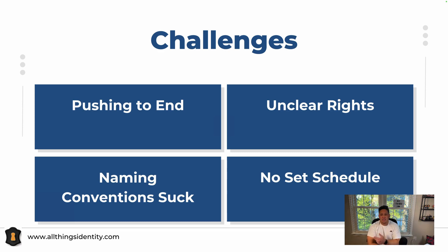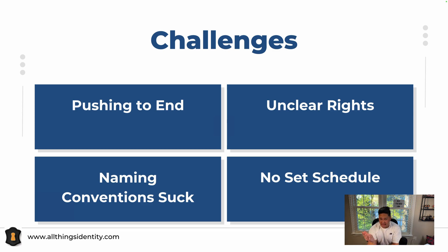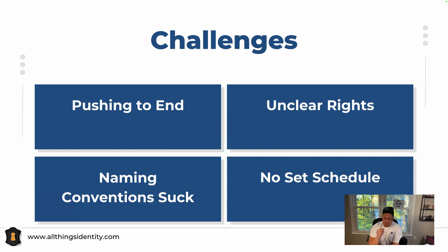The second challenge is unclear rights. And it kind of goes with the third one, which is name conventions. A lot of times most companies use Active Directory or AD to do their access. They'll get provisioned and be assigned various roles or entitlements. Some of them have the most convoluted, crazy names because they don't want to change it, and only certain people know what that means.